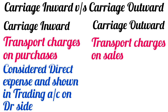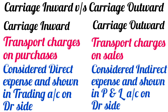Carriage inward is considered a direct expense and is shown in the trading account on the debit side when you prepare the final accounts, whereas carriage outward is considered an indirect expense and it appears in the profit and loss account on the debit side in the final accounts.